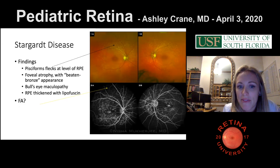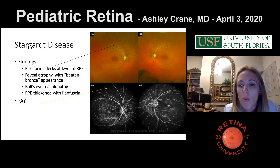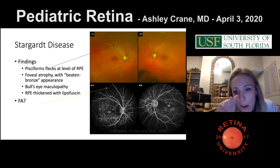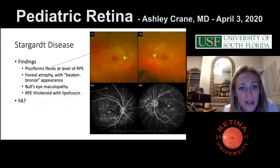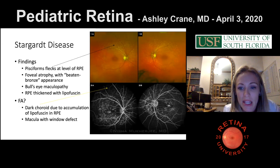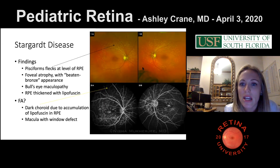The fovea can have a beaten bronze appearance, and bullseye maculopathy is possible. The RPE is thickened with lipofuscin. The FA shows a dark choroid — a very common test question — and sometimes a window defect in the macula. You can see the pisciform flecks on fundus photo and the dark choroid on FA.